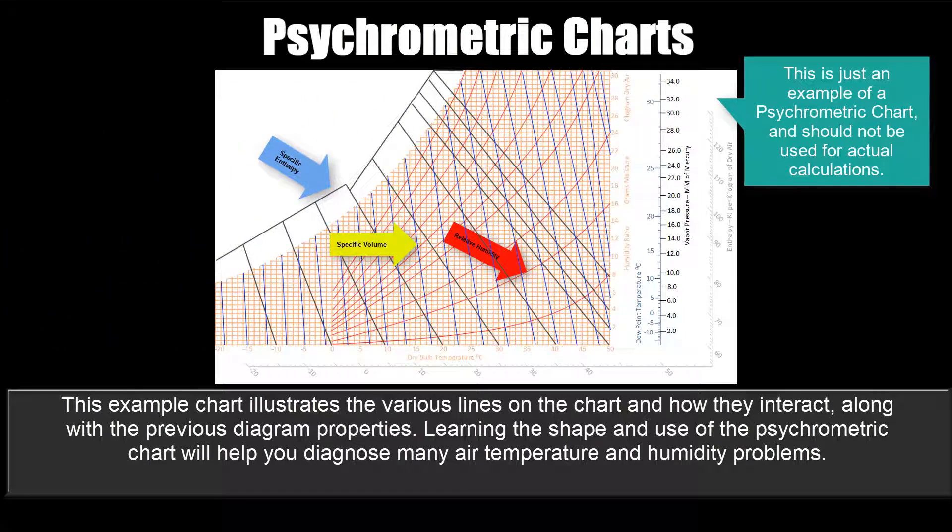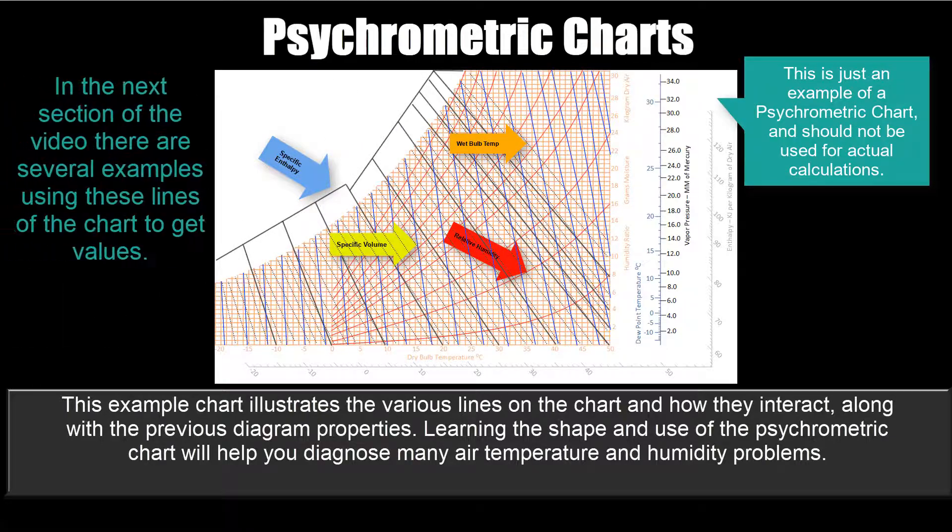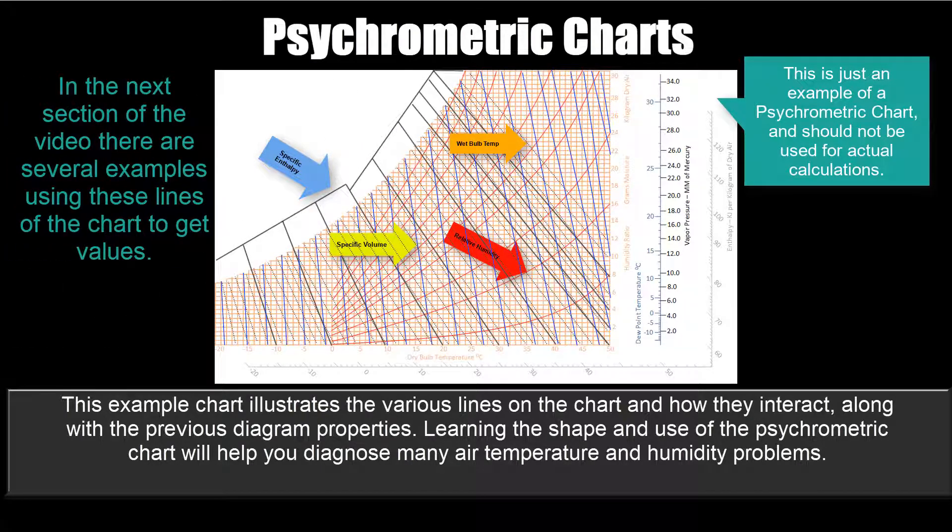Wet bulb temperature, dotted gray. In the next section of the video we go through several examples using these lines on the chart, and how they can give you the various property values.